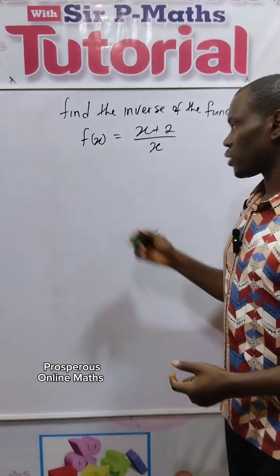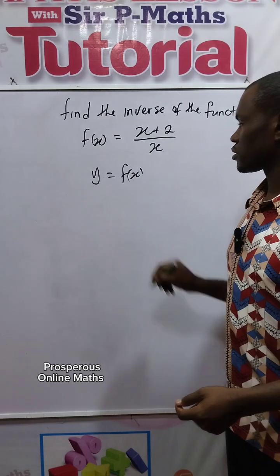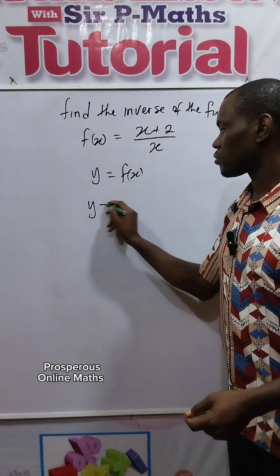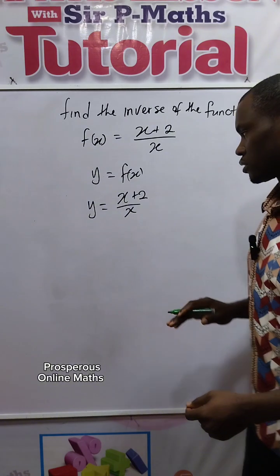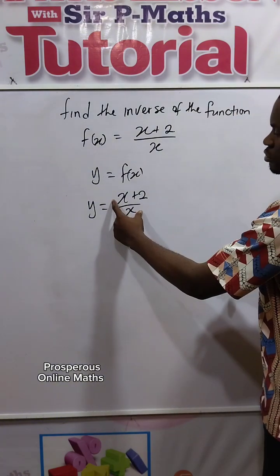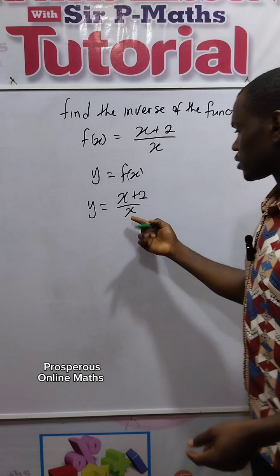Let's introduce a variable y. So let us say that y is equal to the function of x. Then you write it as y equals x plus 2 over x. Now we make x the subject and y becomes a dependent variable. So to achieve that...